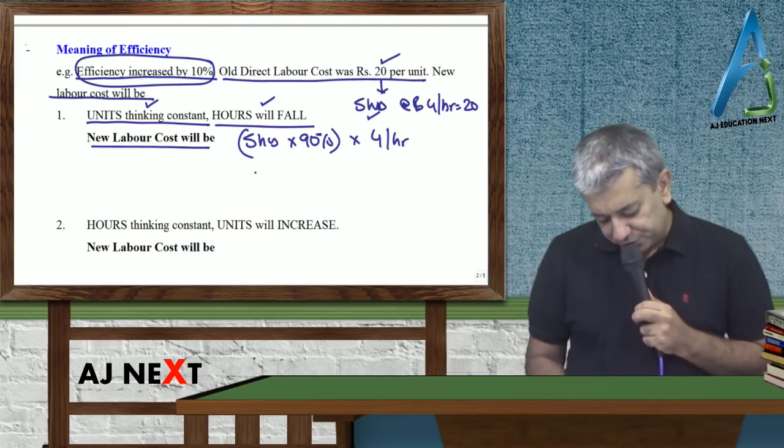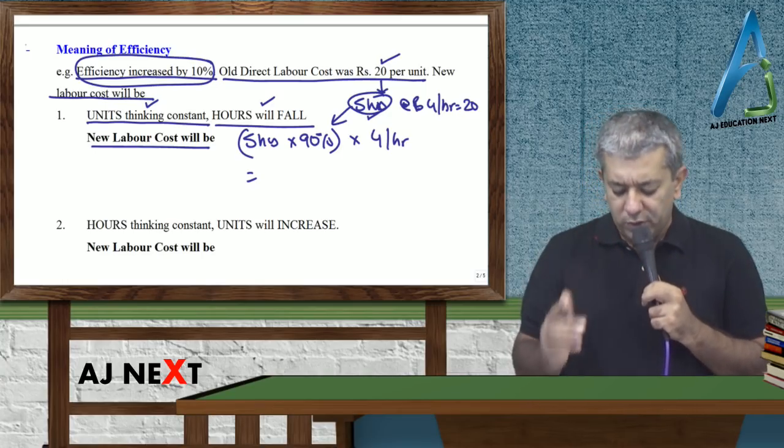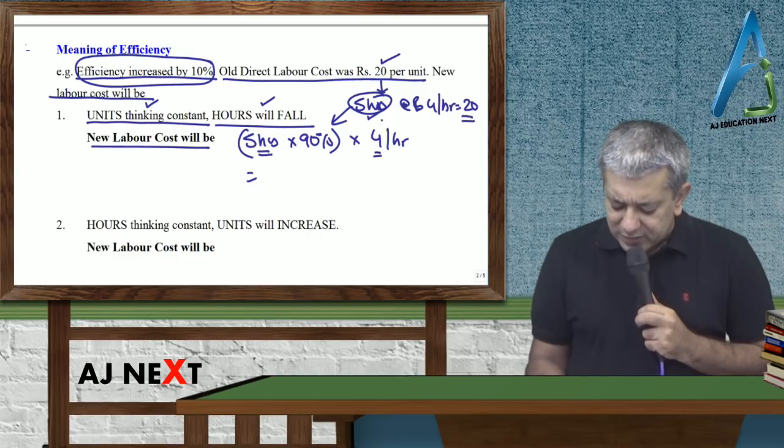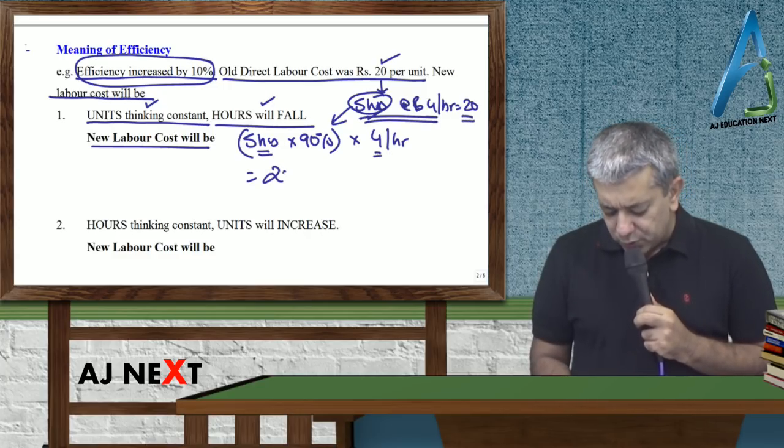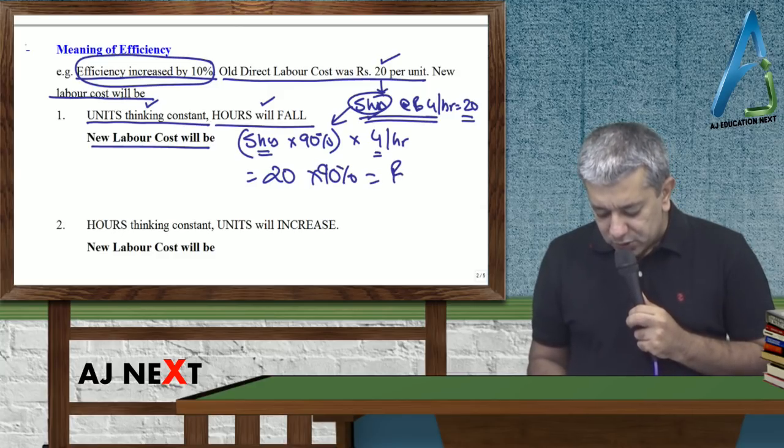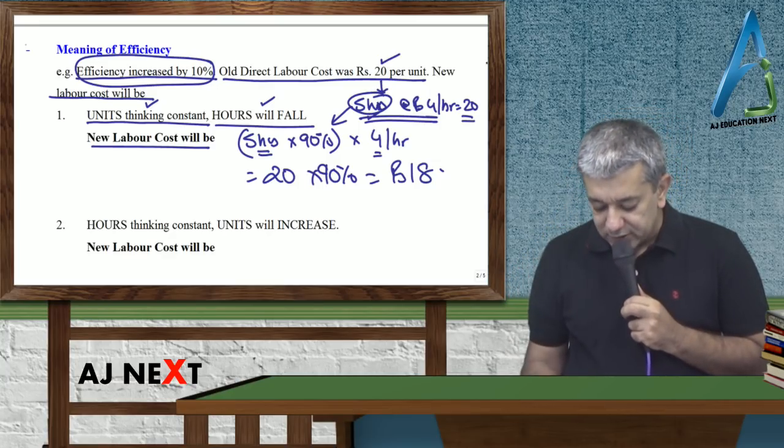So therefore, 4 hours at 4 per hour. Toh ye 5 joh hai, 5 into 90% ho gya. 4 joh hai, 4 hi raha. So 20 into 90%. Toh tumhara labor cost, pahle kitna tha? 20. Abhi kitna ho jaega? 18. This is one way to think of this answer.